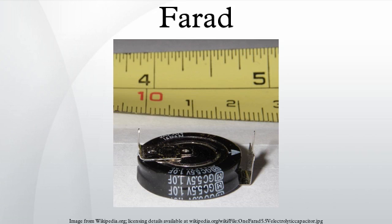A farad has the base SI representation of s⁴·A²·m⁻²·kg⁻¹. It can further be expressed in terms of: A = ampere, V = volt, C = coulomb, J = joule, m = meter, N = newton, s = second, W = watt, kg = kilogram, Ω = ohm, H = henry.